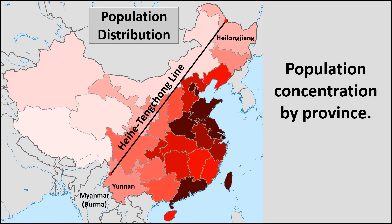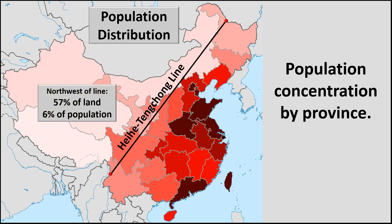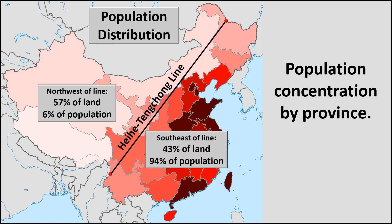Look at this map of the population distribution. The great majority of people live to the southeast of the line. In fact, the population distribution contrast is stunning. Using current statistics, the northwest makes up 57% of China's land area but holds only 6% of its population, while the southeast is 43% of the area but is home to the vast majority of people — 94%. Clearly, there must be reasons for this unequal distribution of the population.